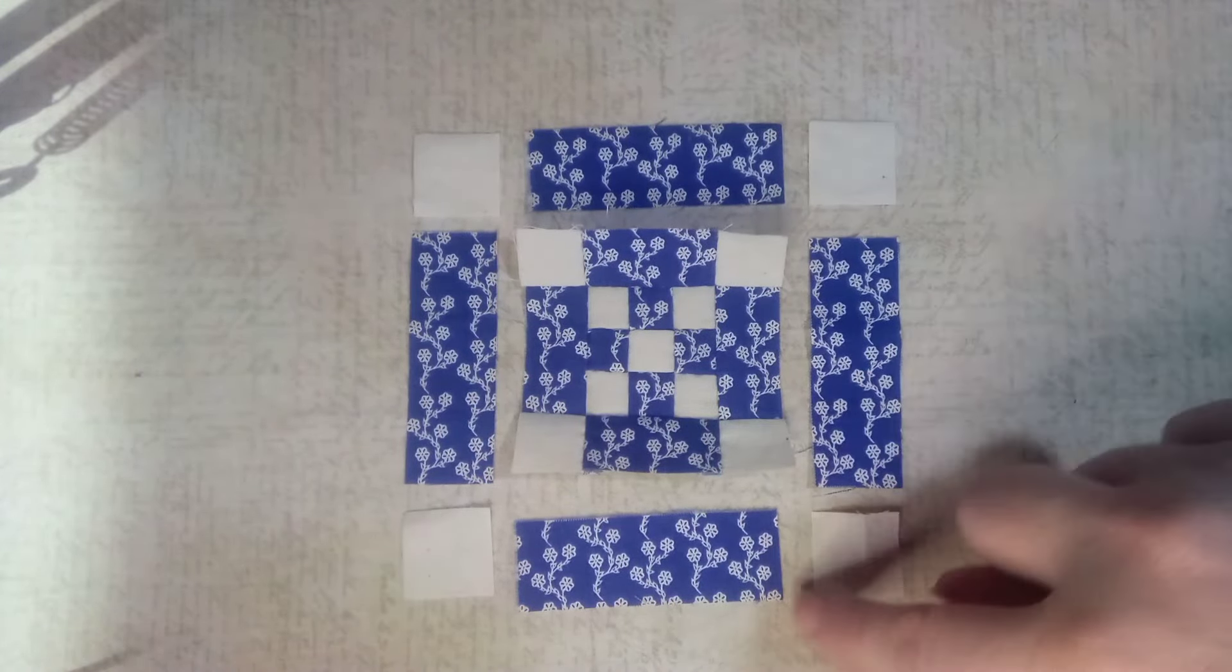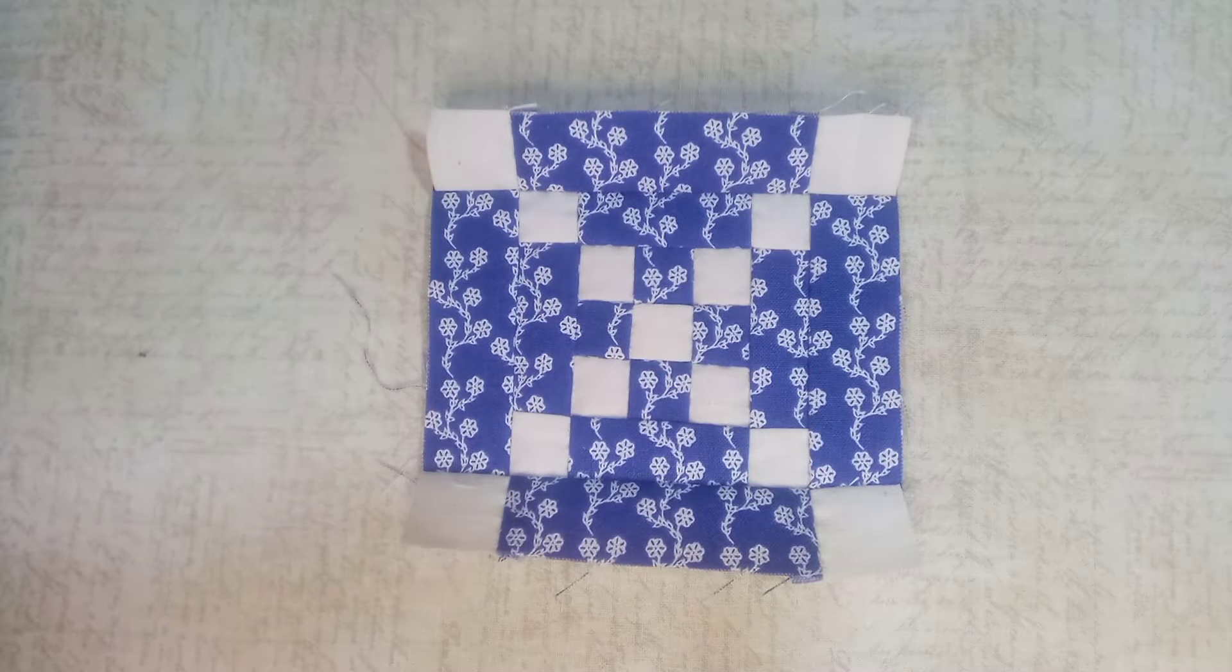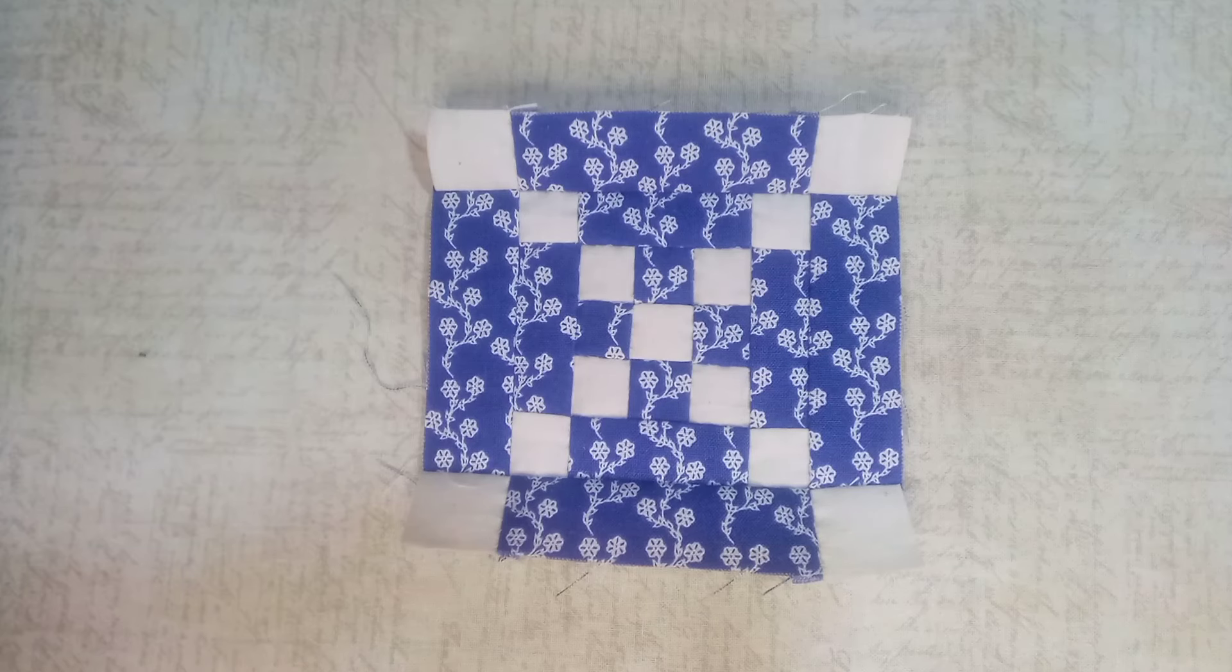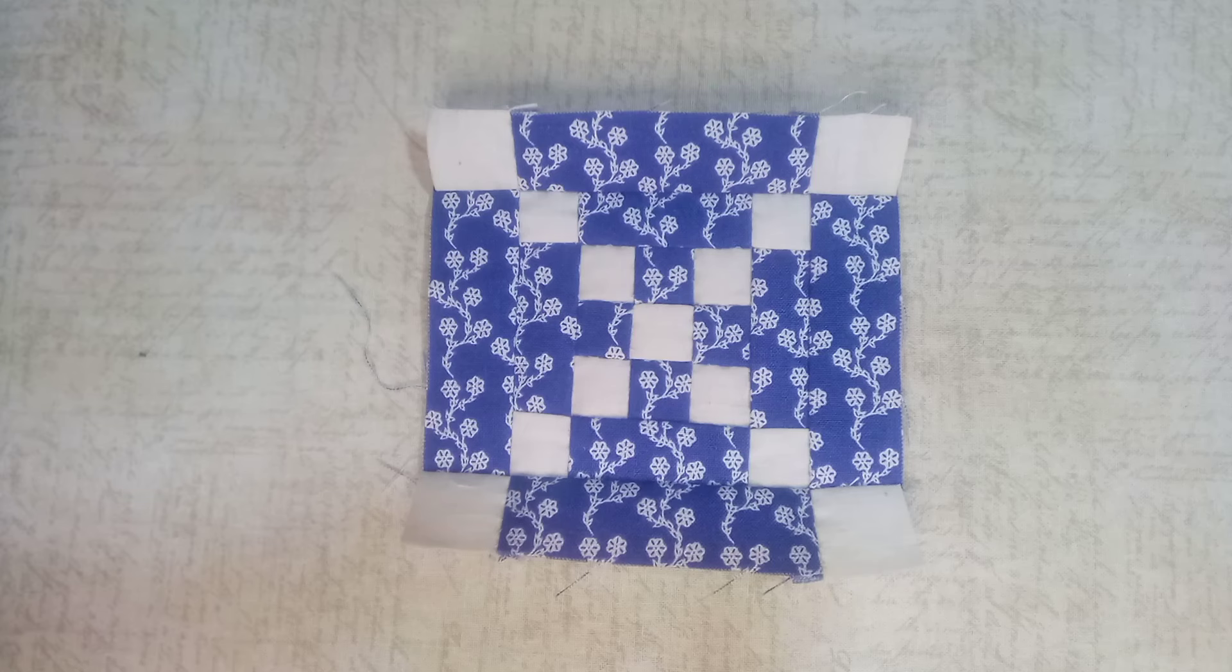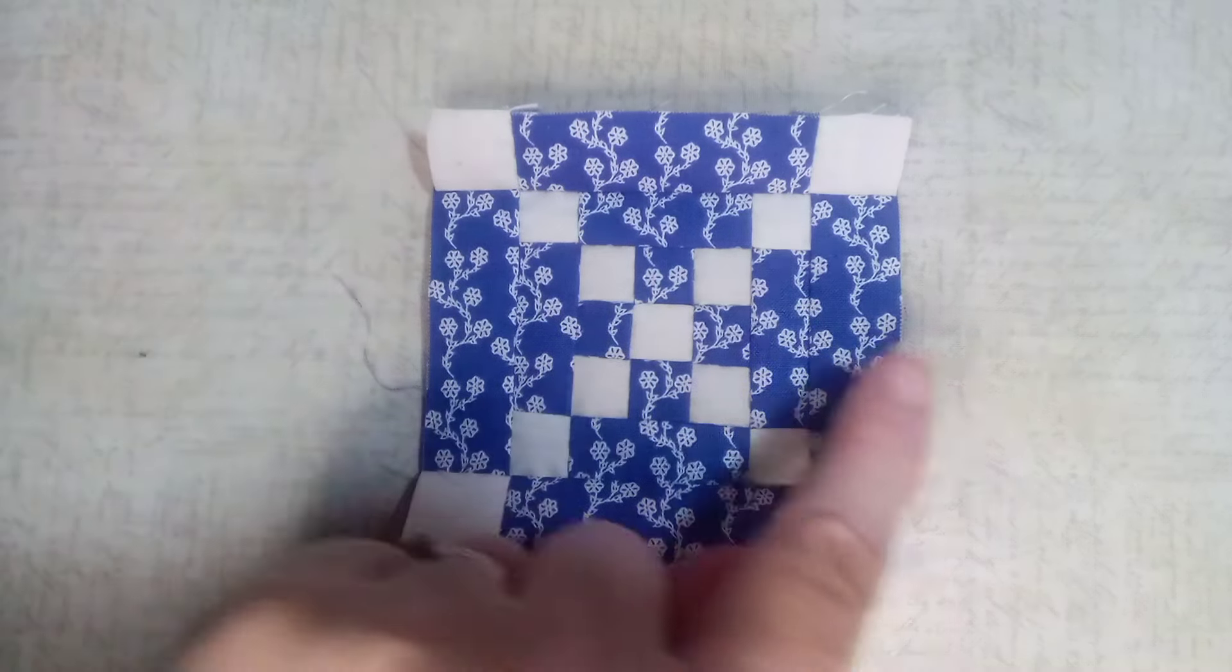With my center portion of this block finished, I'm now ready to add that outer border. I've pressed the block and measured it, and it measures to four inches exactly, which is right on track. So what I need to do is add a half-inch border all the way around. So the pieces are going to be cut one inch wide, and one piece will be cut four inches by one inch, and I'll have two of those. So that'll be for two of the side pieces.